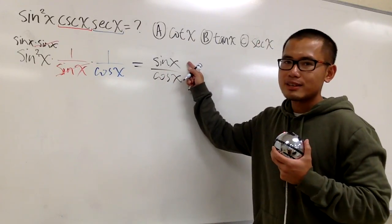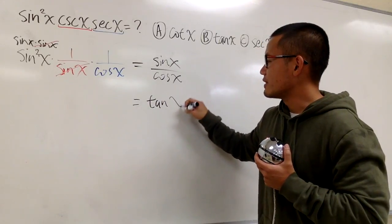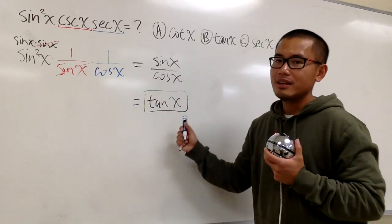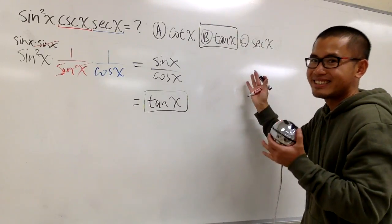And what's sine x over cosine x? Well, this is the same as tangent x. This is the simplest we can get, and that's choice B. And that's it.